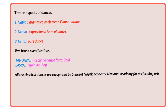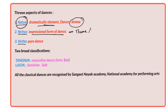The first one is Natya — the dramatic element of the dance where the dancer performs drama within the dance. The second one is Nritya, which is the expressional form of dance, performed to convey the theme or idea. The third one is Nrita, which involves only pure dance form with no expressions or dramatic elements — body movements do not convey any meaning or mood.